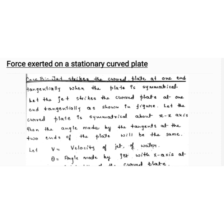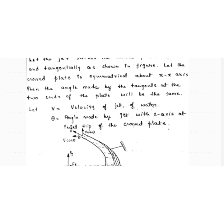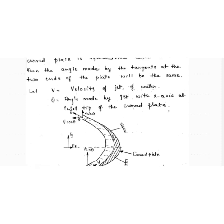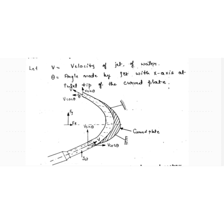Since the plate is symmetrical, we can say that the angle made by the tangents at the two ends of the plate will be the same — that is theta at both ends. If we take the x-axis, the portion above and below the x-axis are equal. Let v be the velocity of the jet and theta be the angle made by the jet with the x-axis at the inlet tip of the curved plate.